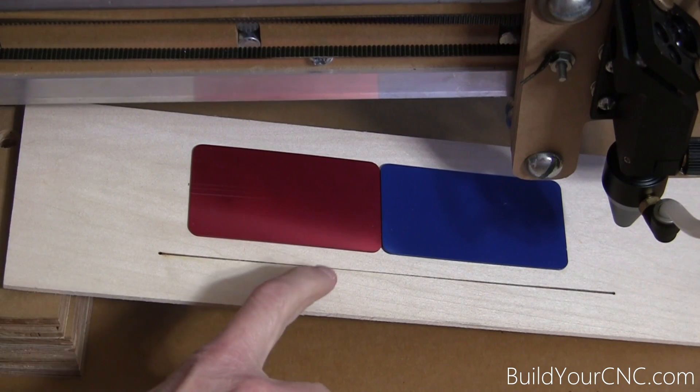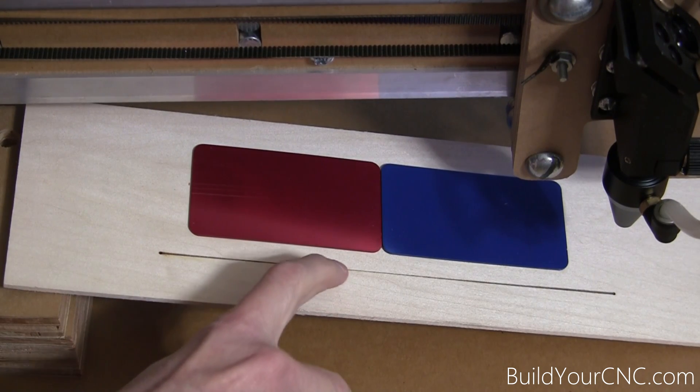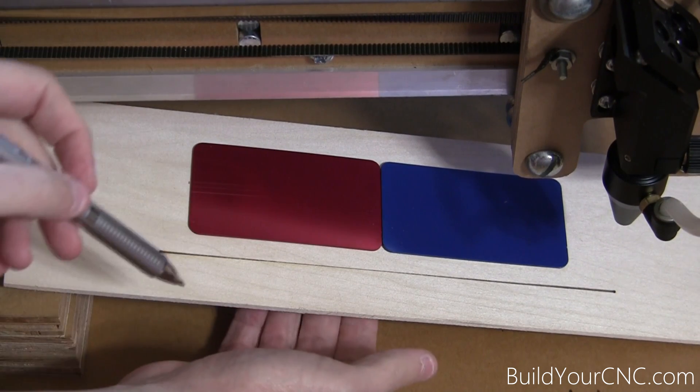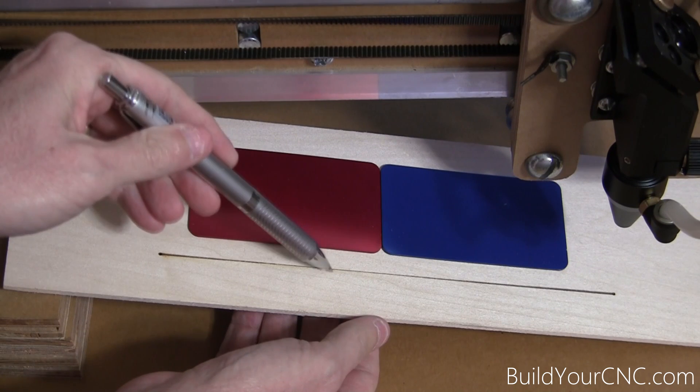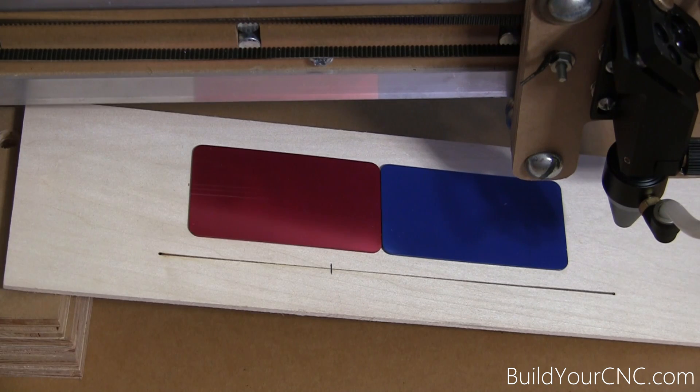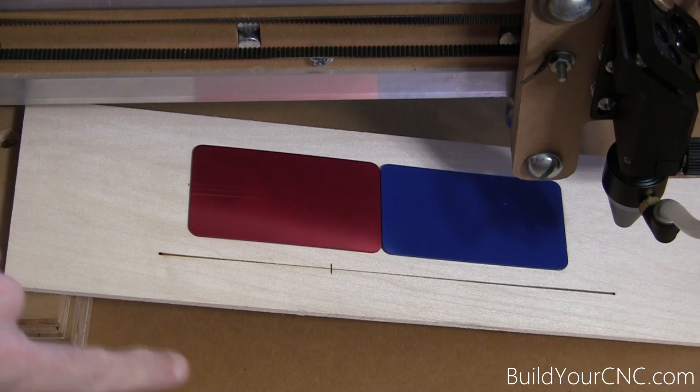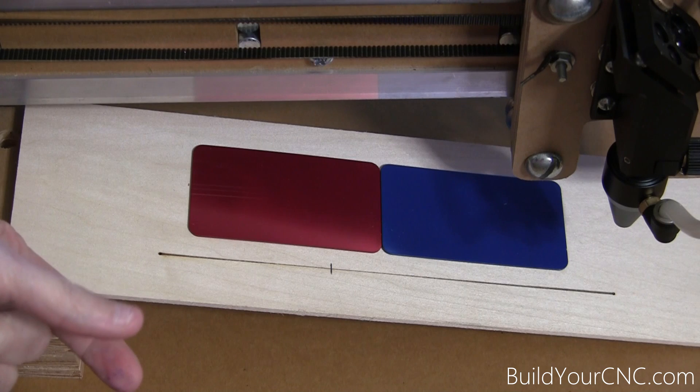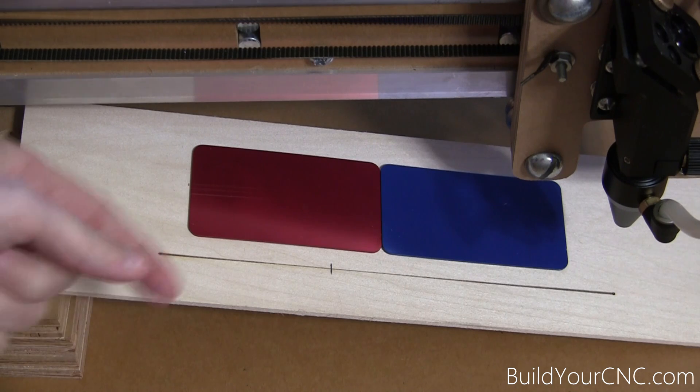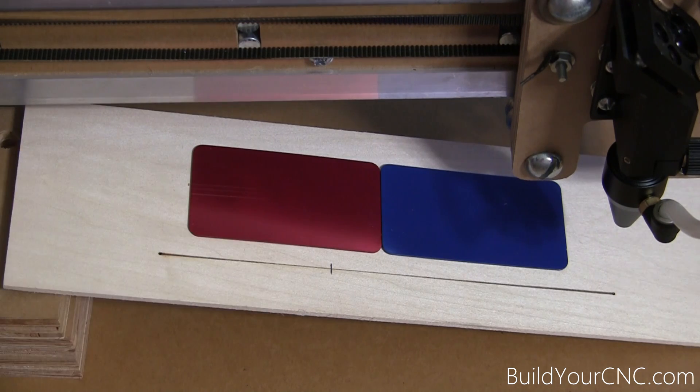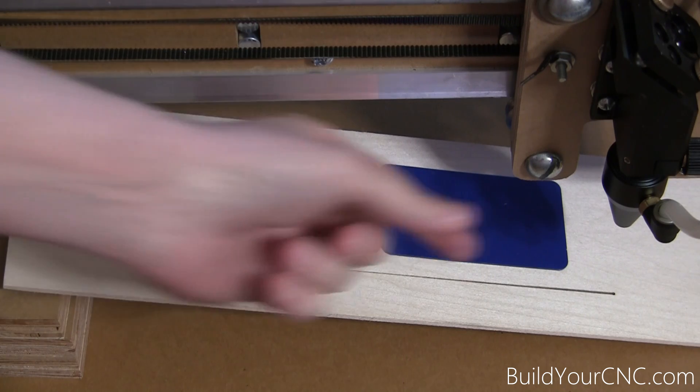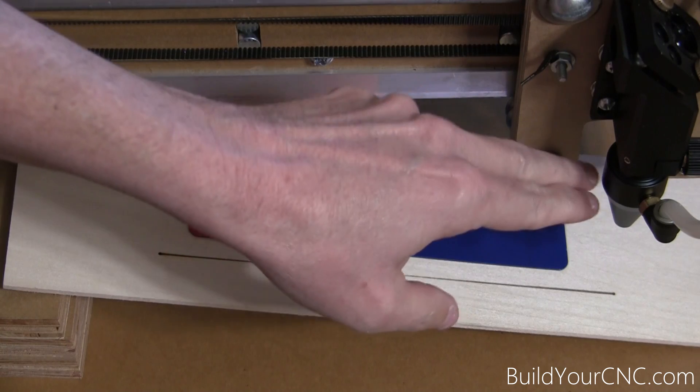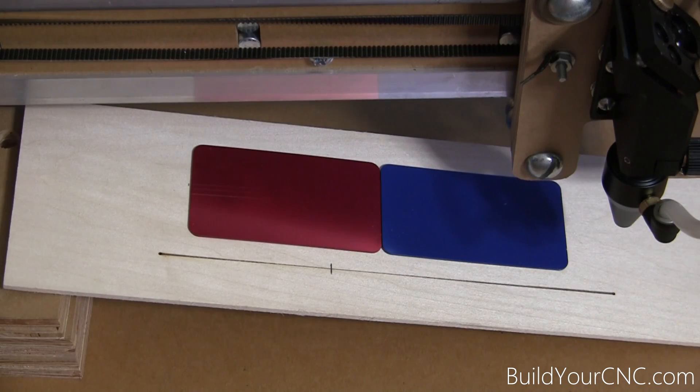You can see that the optimal point looks like it's about right here, so I'm going to mark that with a pen. I'm going to try to do this as carefully as possible so I don't move anything. We're going to get a caliper. You can also use something of a particular thickness and then maintain that thickness so we can determine what that length is. You can create a block that you set underneath the nozzle to set your optimal focal length.